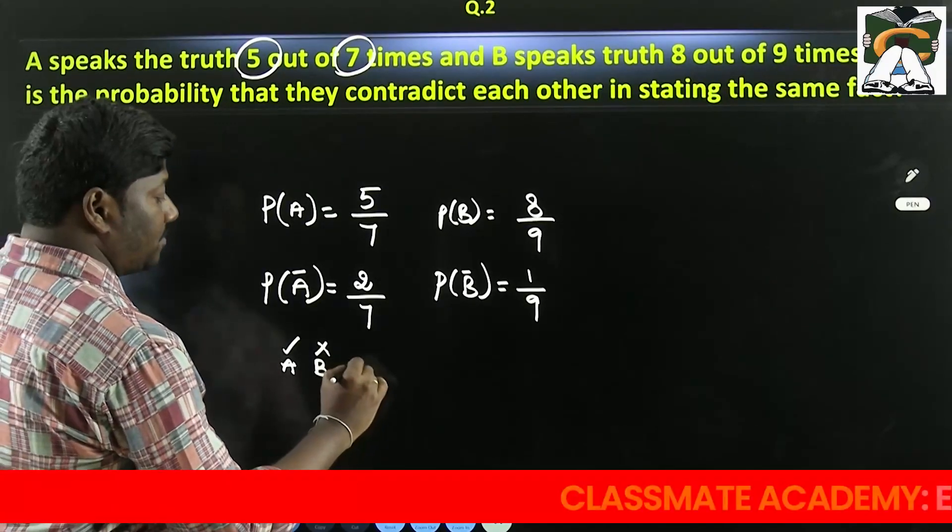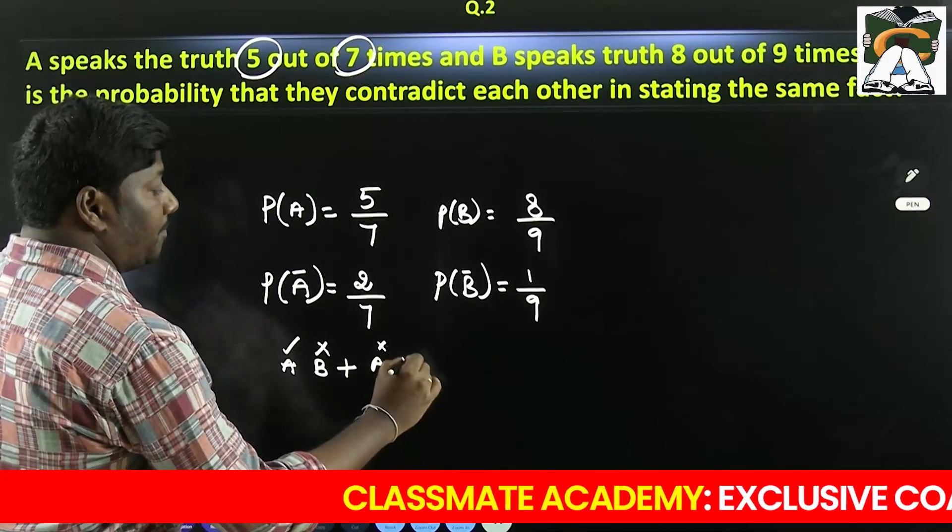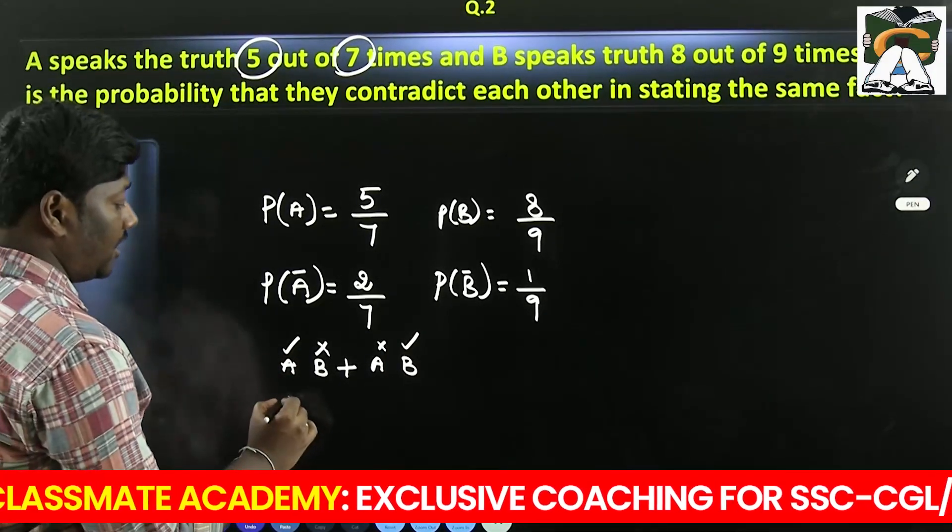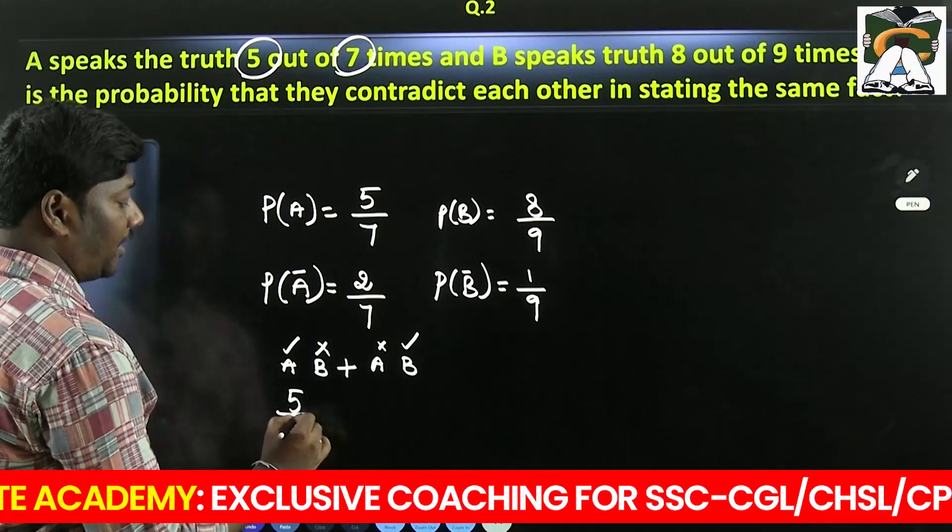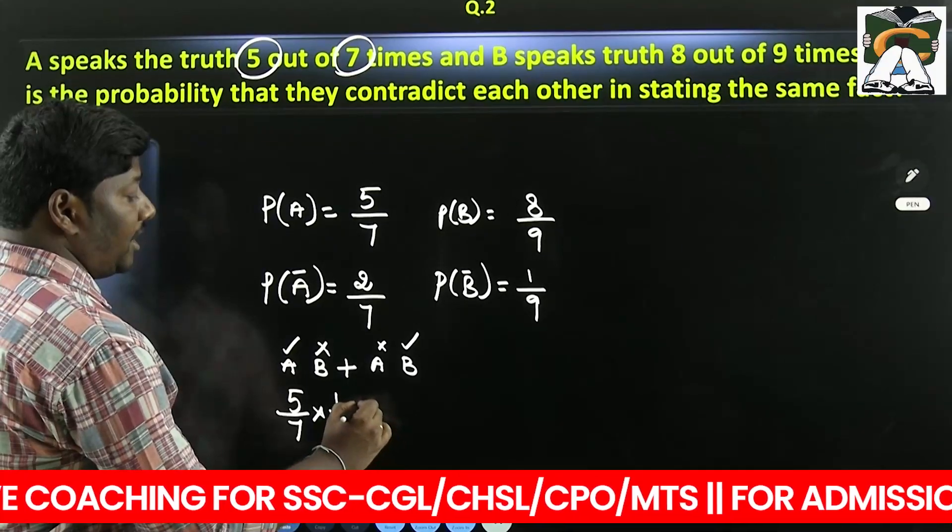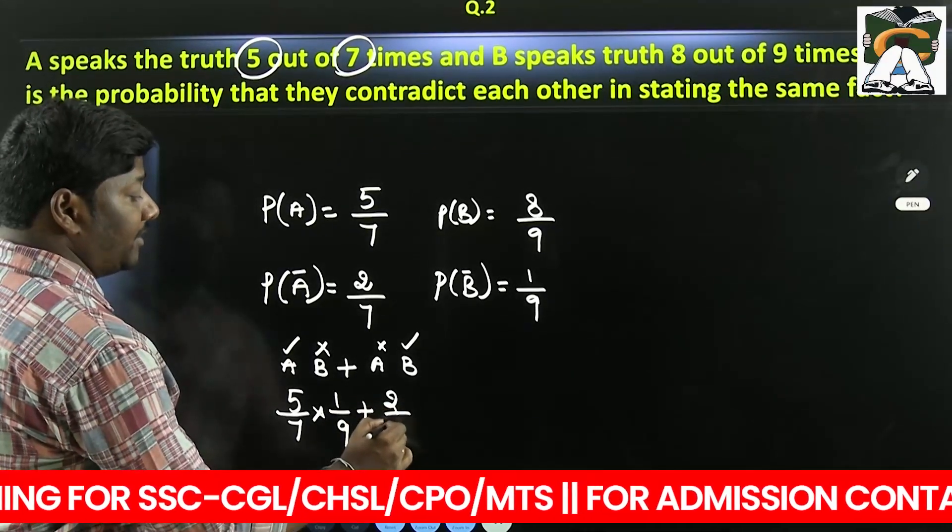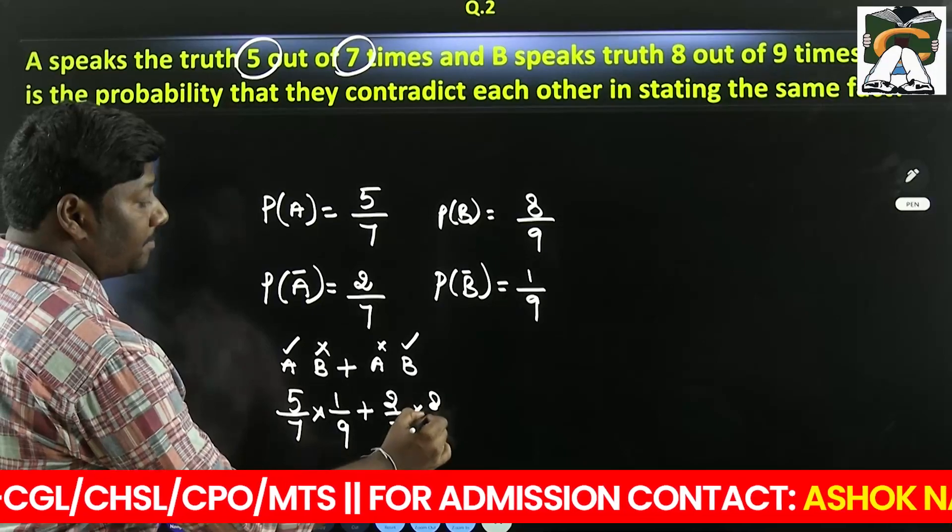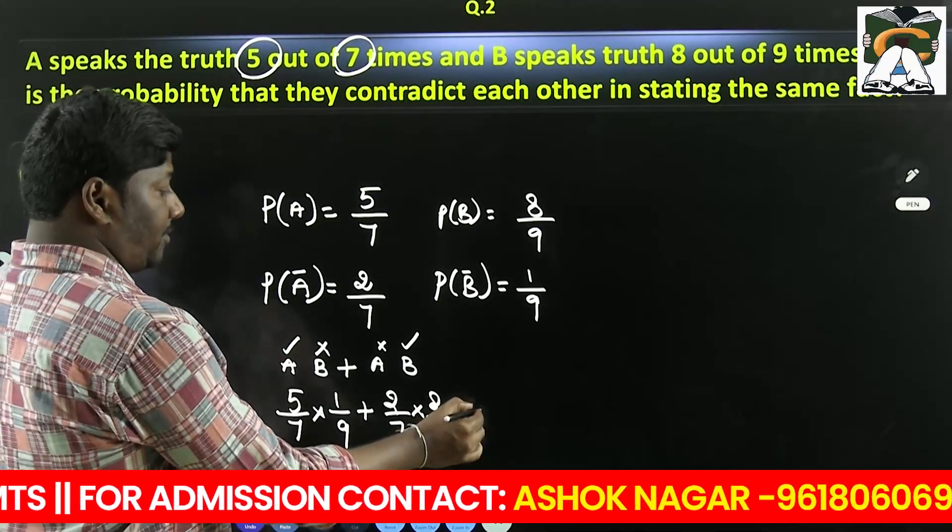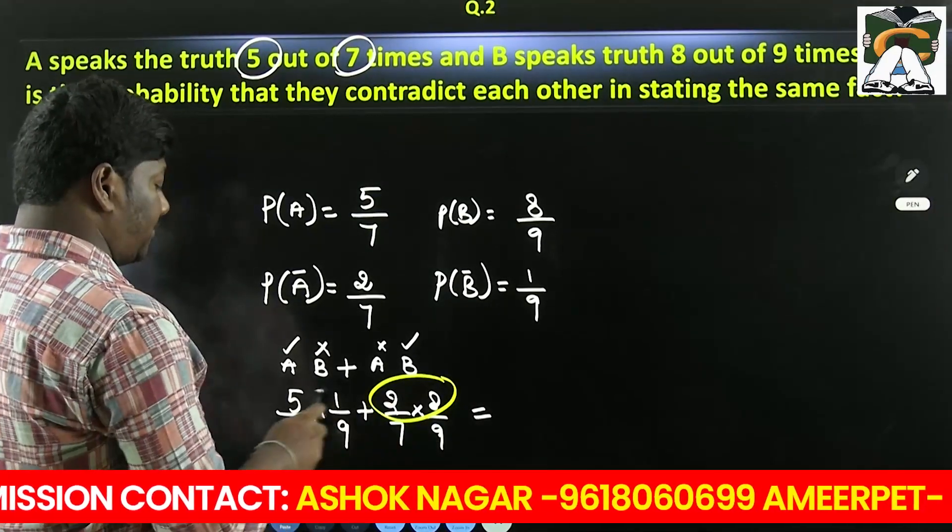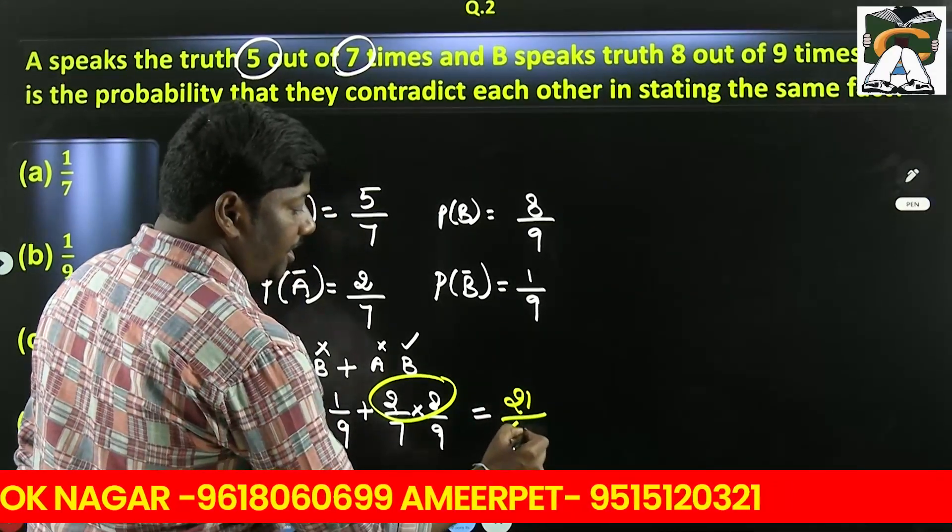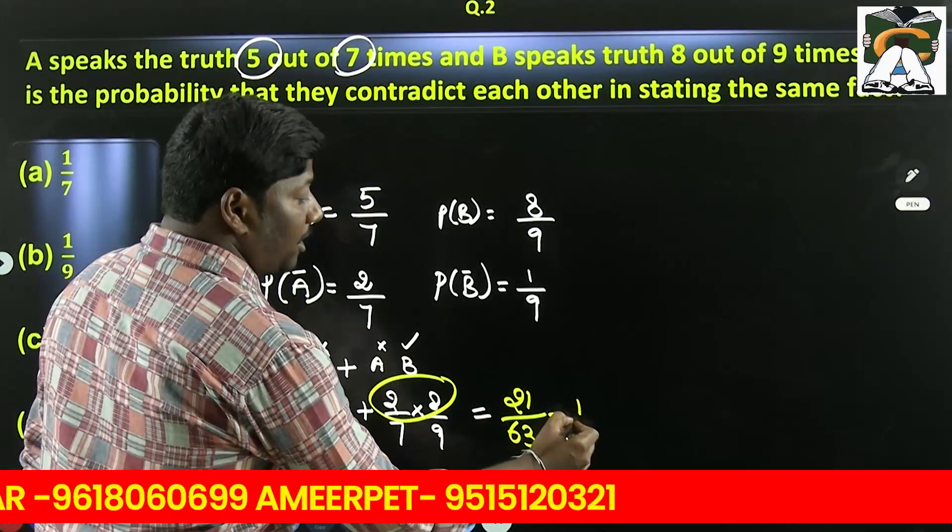Contradict each other means if A speaks truth, B should not speak truth. If A is not speaking the truth, then B should speak the truth. So if A speaks truth, B should not speak the truth. So 5 by 7 into 1 by 9. If A is not speaking the truth, then B speaks the truth. 2 by 7 into 8 by 9. 7 into 9 is 63 in the denominator. 16 plus 5 is 21. So 21 over 63, that is 1 out of 3.